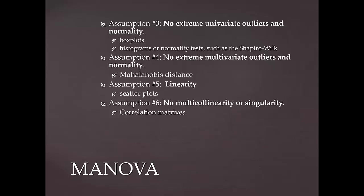For multicollinearity we use correlation matrices. Now, assumption 7 is that there is homogeneity of variance-covariance, and also homogeneity of variance. The assumption of homogeneity of variance-covariance is assessed using Box's M. In SPSS, this can be selected as part of the MANOVA output. A significance level for Box's M that is larger than 0.05 indicates that equal variance can be assumed. A significance level of less than 0.05 — or 0.001, depending on the textbook — means that the variance-covariance cannot be assumed and the assumption is not tenable.